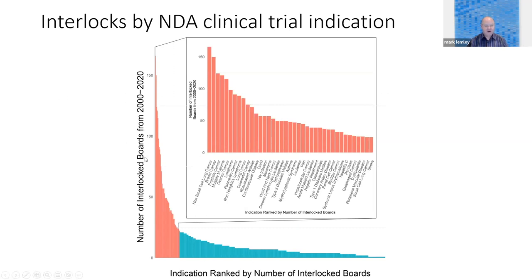We highlight and break out the industries where there are more than 25 interlocked boards in a particular NDA application space. What this suggests to us is that this is a real and quite significant phenomenon, even as you drill down and narrow down on companies that are much more likely to be competitive.